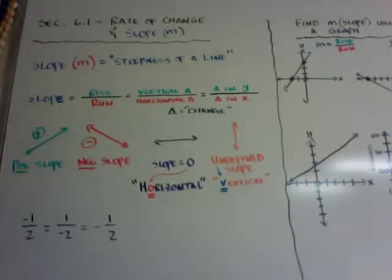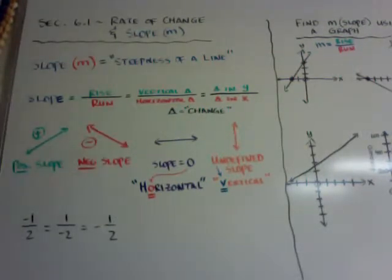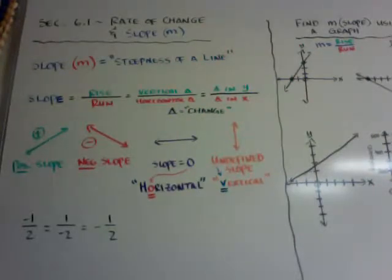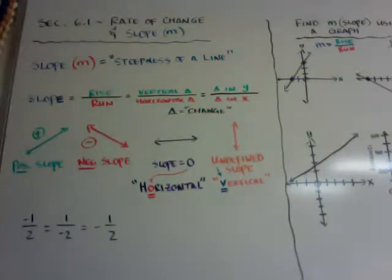Hi, you guys. This lesson is on section 6.1, which is rate of change and slope. The slope is also designated as M. Slope, otherwise known as M, is the steepness of a line — how steep a line is.